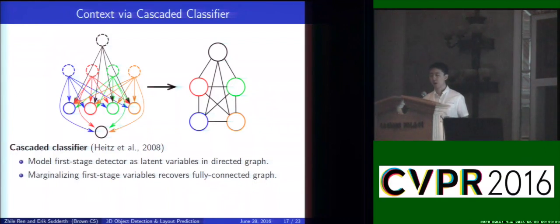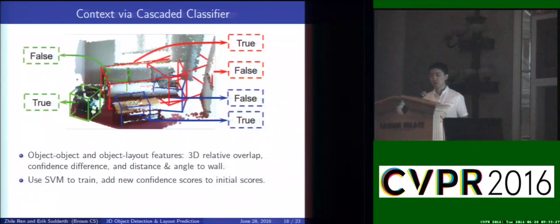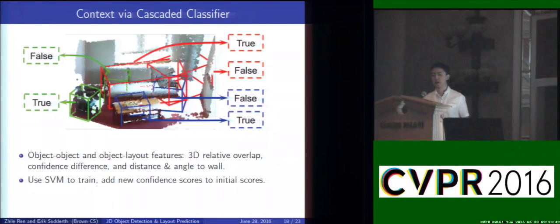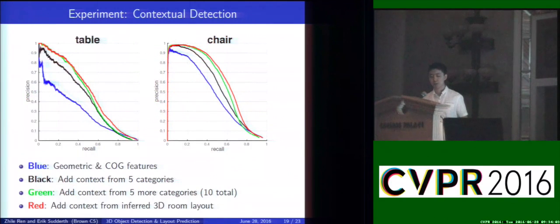We update the confidence scores at the second-stage detector. Specifically, we model this as a binary labeling problem: for each proposed cuboid, we predict whether this is a true positive or false detection. We design features for object-object and object-layout relationships, such as 3D relative overlap, confidence difference, and distance and angle to the wall. We use an SVM to train and get the new confidence score, adding it back to the previous score for the final estimation. Experiments show that with more and more contextual information, our performance gets better and better.